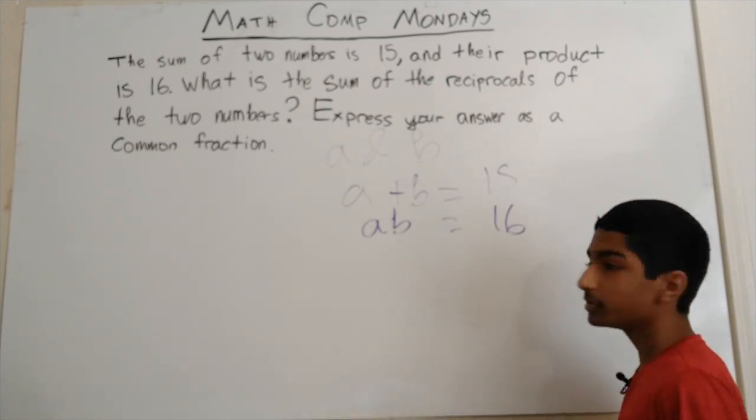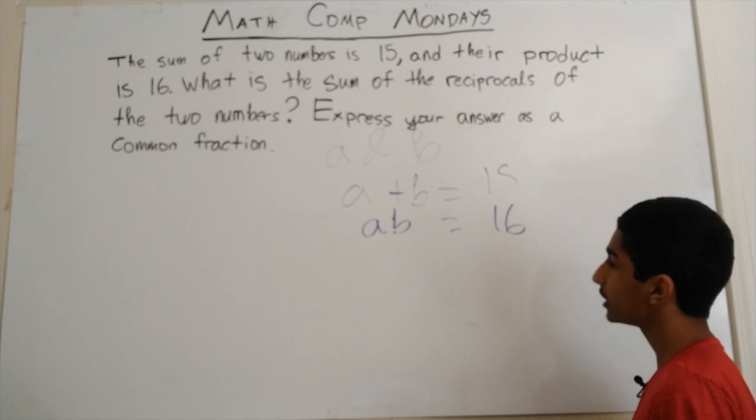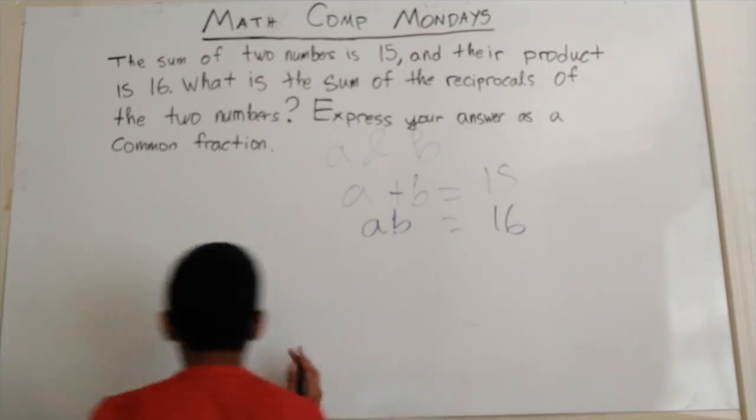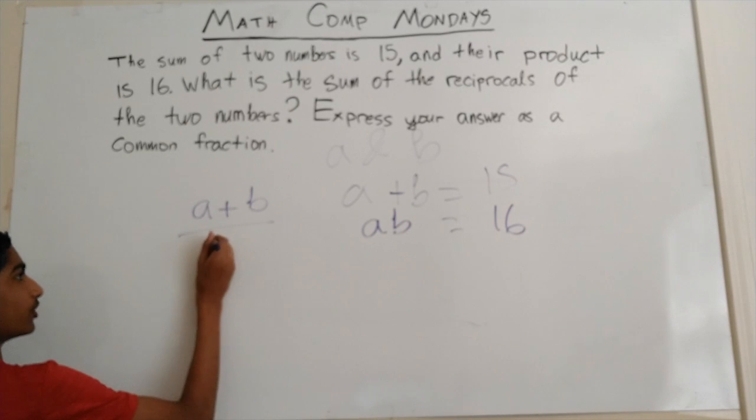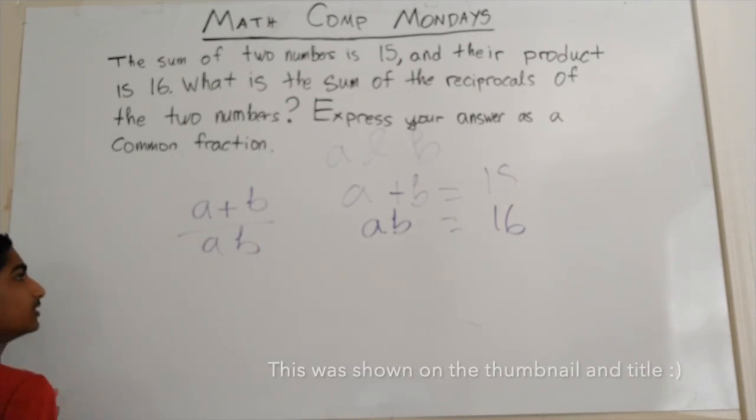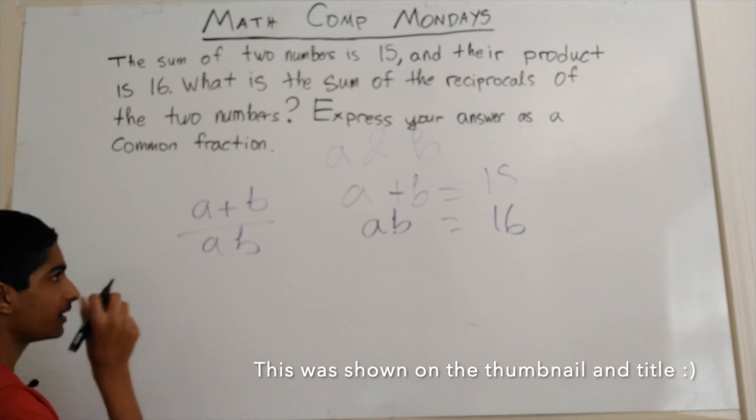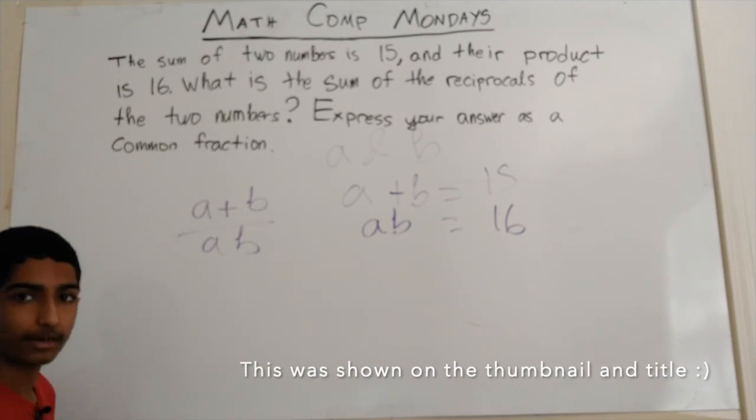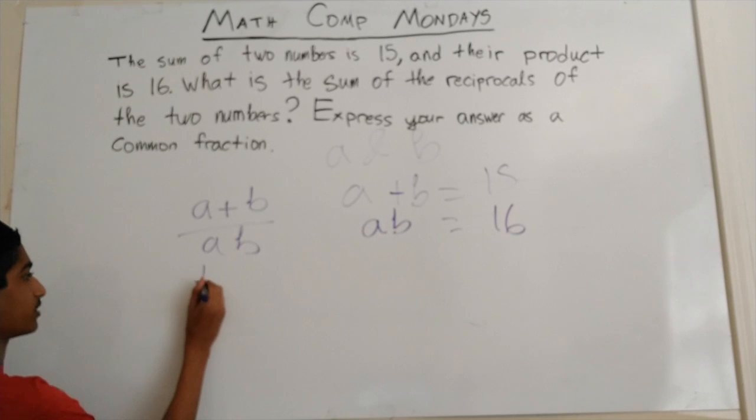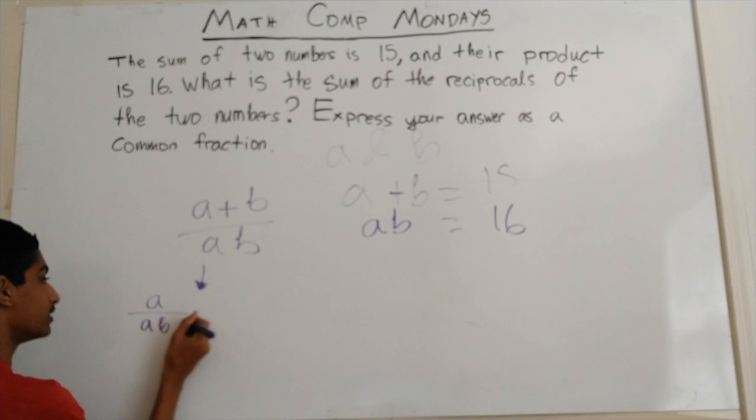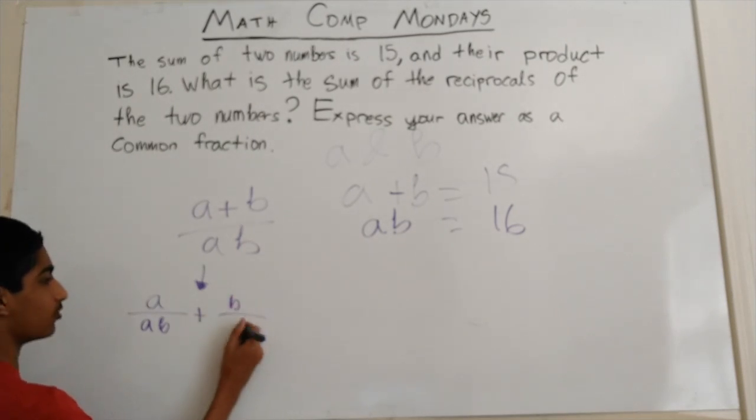So there's a really clever algebra manipulation trick you can do here, where it's basically A plus B over AB. So let's look at this, right?